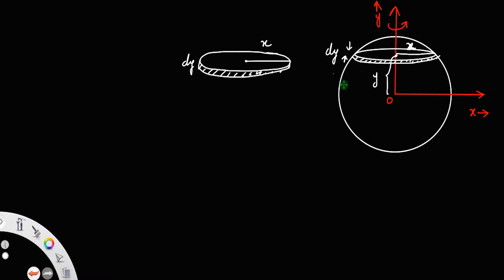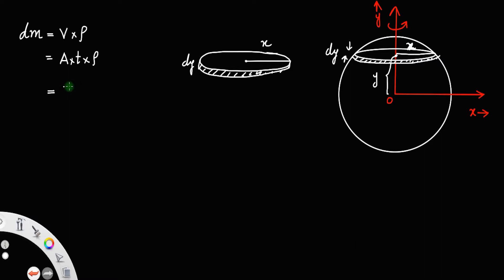Now, since it is a circular disc, it has a moment of inertia of half m r squared. Before that, let us formulate the mass of the disc. Let dm be the mass of the disc. Mass will be volume times density. Volume is equal to area times thickness, so dm equals pi x squared times dy times rho, where rho is the density. That is the mass.